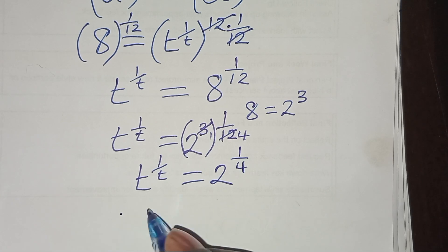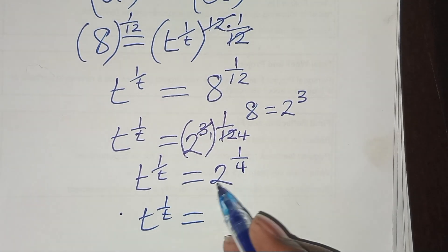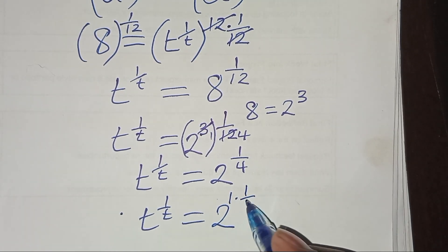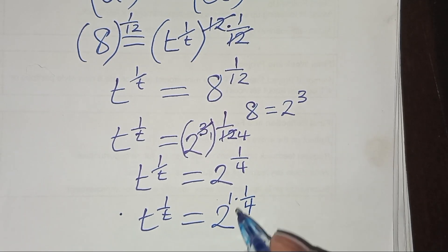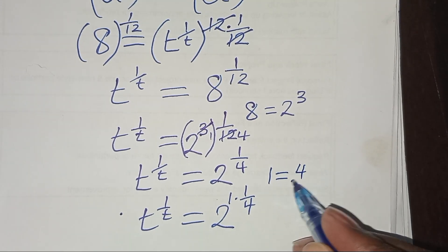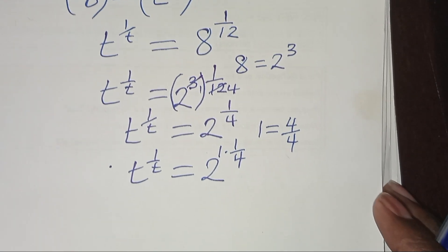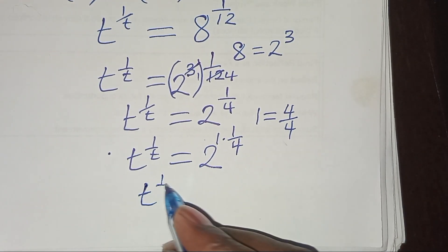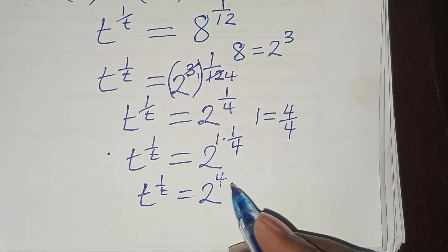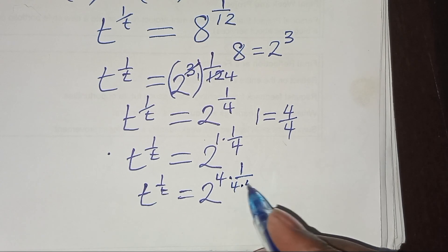The next step: we have t to the power (1 over t) is equal to 2 to the power (1 over 4). We can express 2 to the power (1 over 4) as 2 to the power (1 times 1 over 4). Substituting this, we have t to the power (1 over t) is equal to 2 to the power 4, multiplied by 1 over 4 times 4.